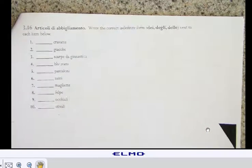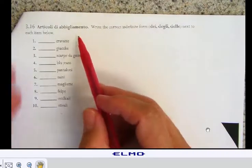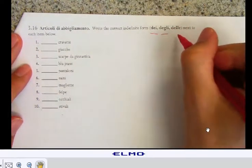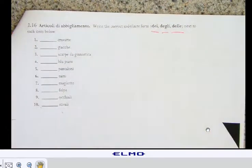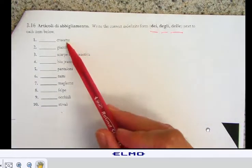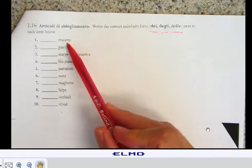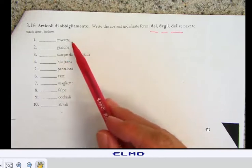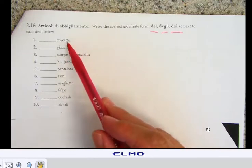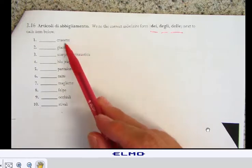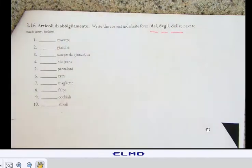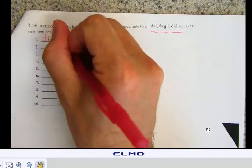On 316 here, articuli di abigliamento, you're supposed to write the correct definite article. Dei, dei, and delle. Similar to our previous activity, the important thing to note is that you have to determine what the gender is. Is the word masculine or feminine? You also have to determine is it singular or plural? So, cravate is the plural word, ties. It's a feminine word. I can tell by the E there. So, I'm going to say delle cravate.